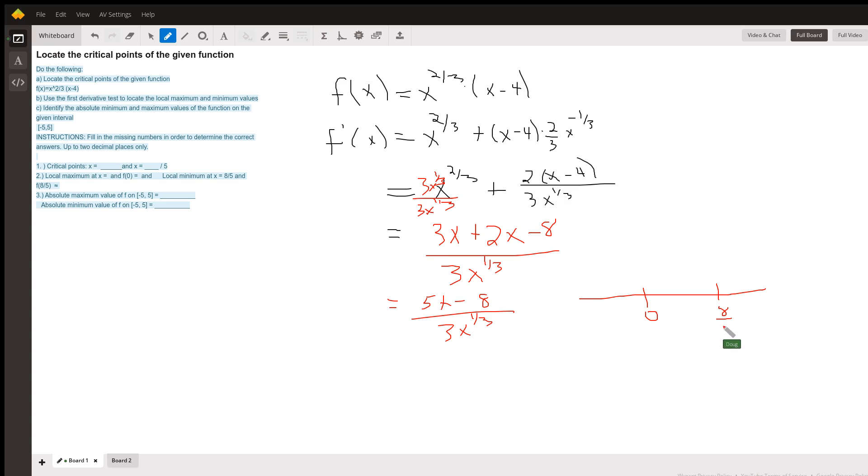And to apply the first derivative test, we're going to pick a number in each interval on the number line that these critical numbers divide the number line into, find the sign of y prime in each of those intervals, and then draw little arrows to indicate increasing, decreasing, and that will identify relative maxima and minimums.